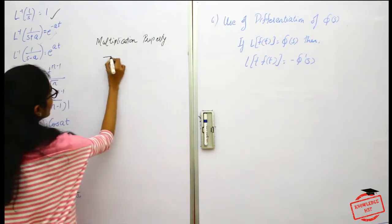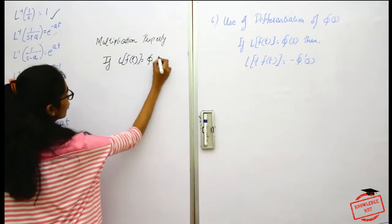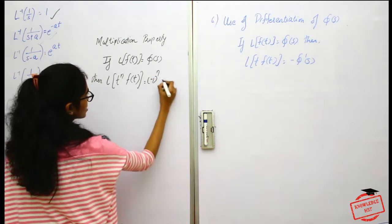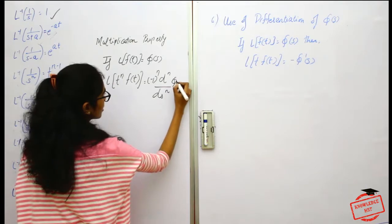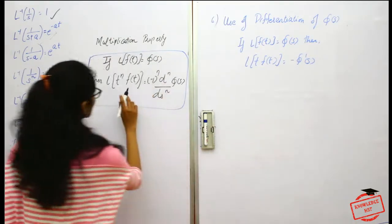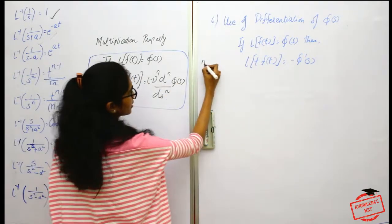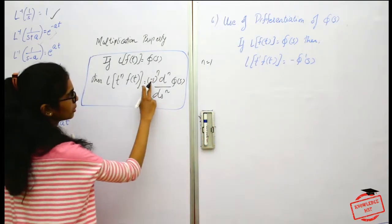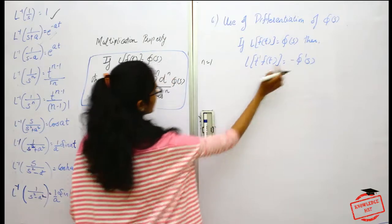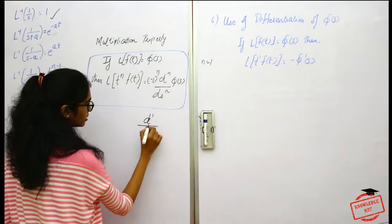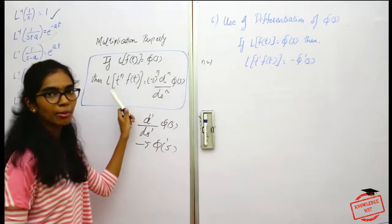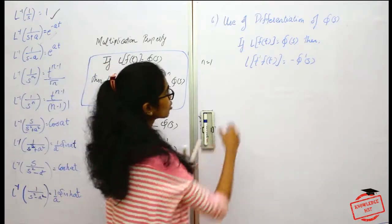This comes from the multiplication property of the Laplace transform. That property states: if L{f(t)} = φ(s), then L{tⁿ·f(t)} = (−1)ⁿ · dⁿφ(s)/dsⁿ. Here, n is simply 1, so t¹·f(t) gives (−1)¹ · d¹φ(s)/ds¹, which is minus φ'(s). So I've used the multiplication property from Laplace transform.